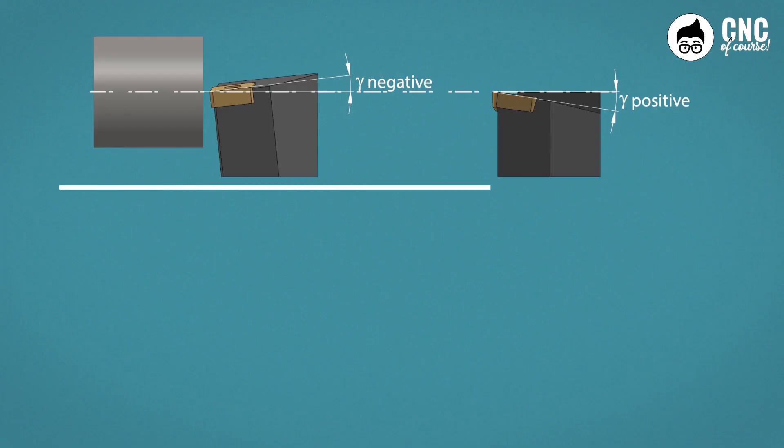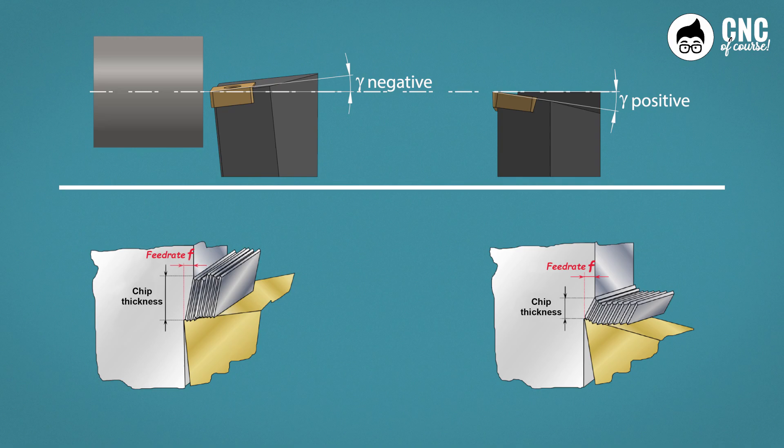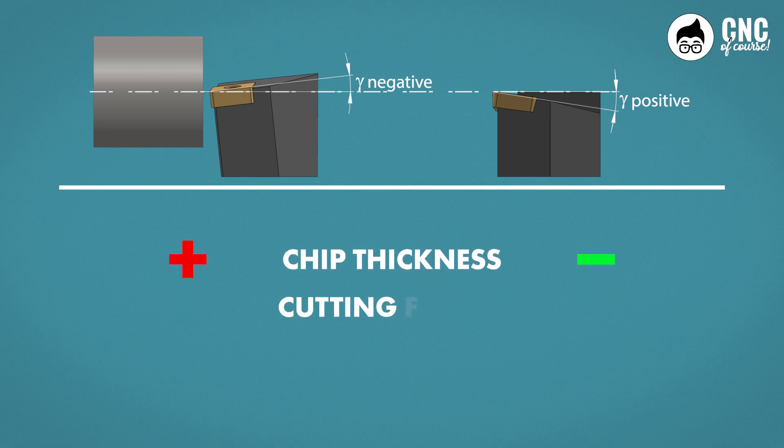removed. If we measure the thickness of the chip with a micrometer by taking a real one from our machine tool, we will notice a curious thing. The thickness of the chip generated with the positive tool will be less than the thickness generated with the negative tool. In other words, in one case compared to the other, the tool will deform the same amount of material, but will do so in a different way, thus generating different thicknesses,